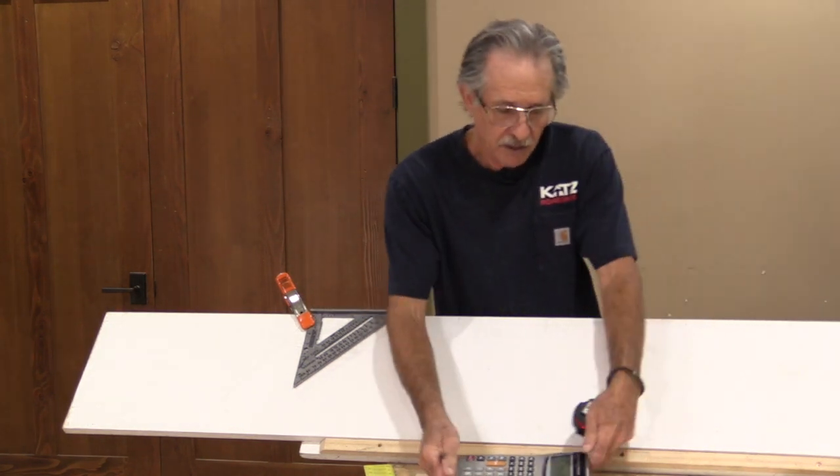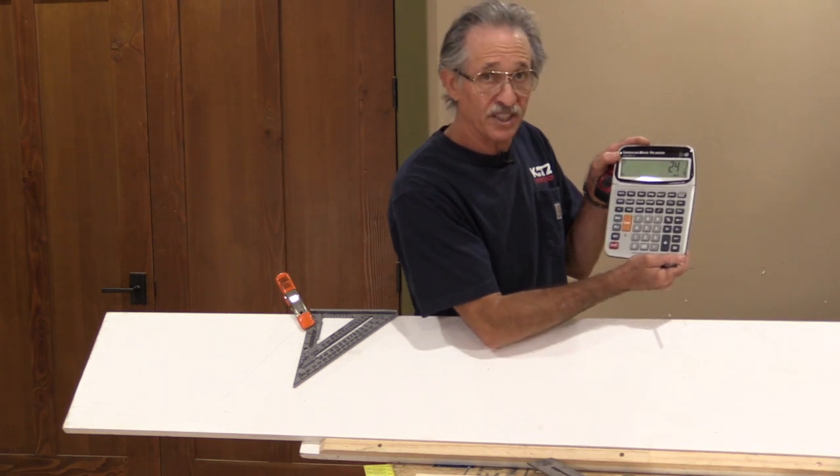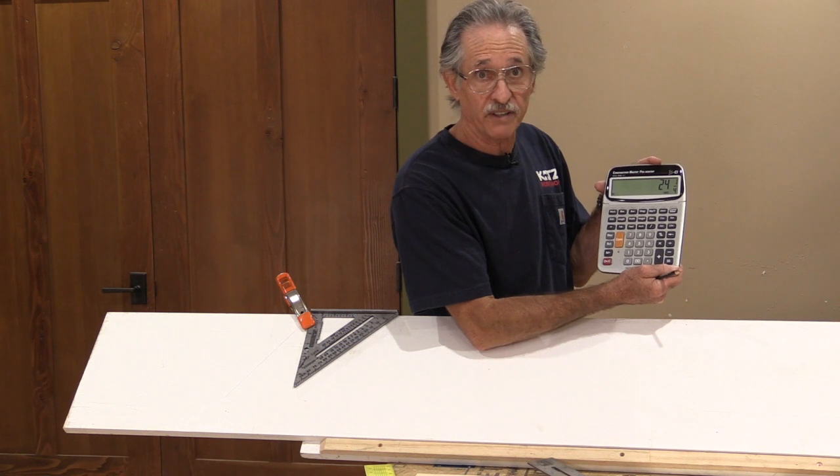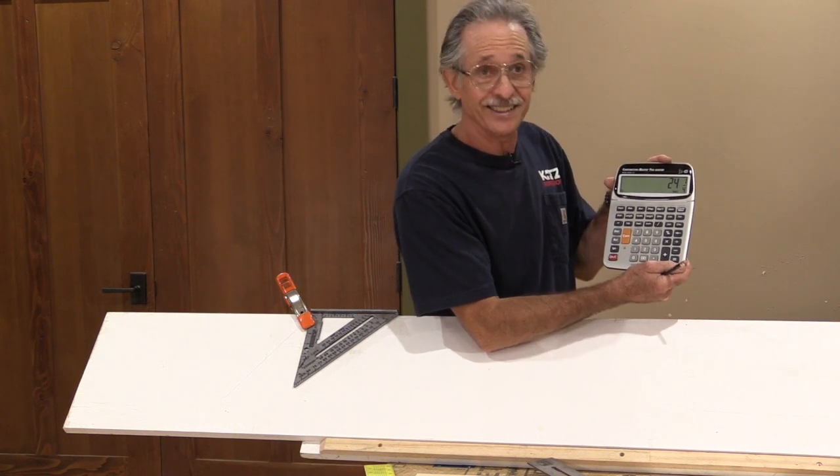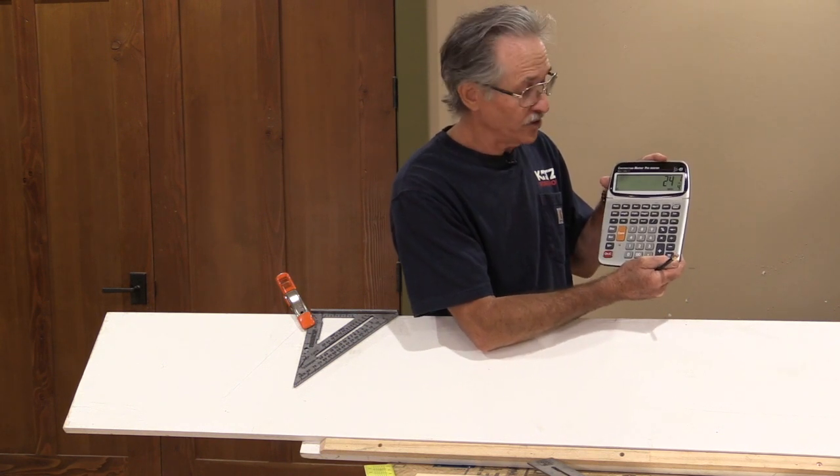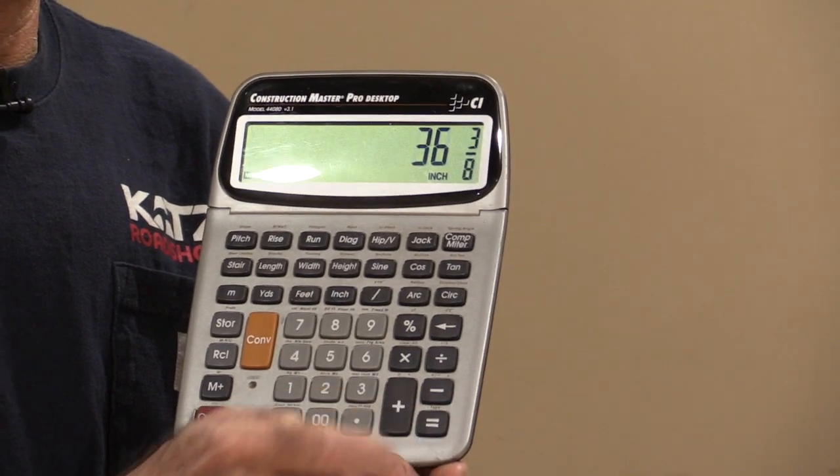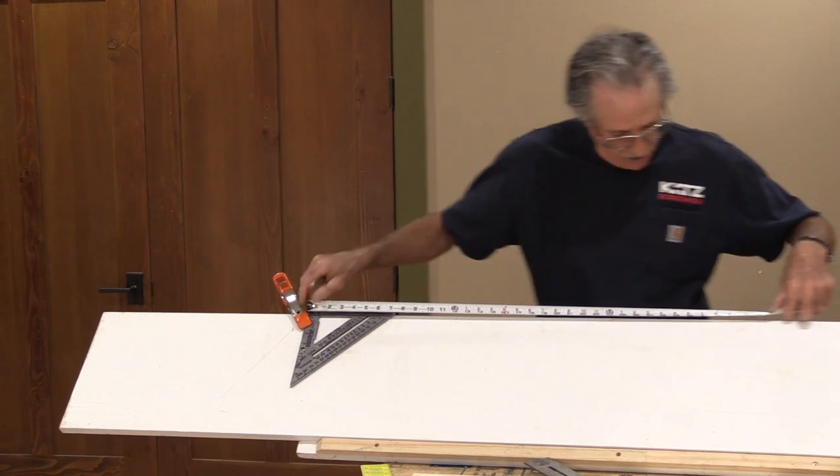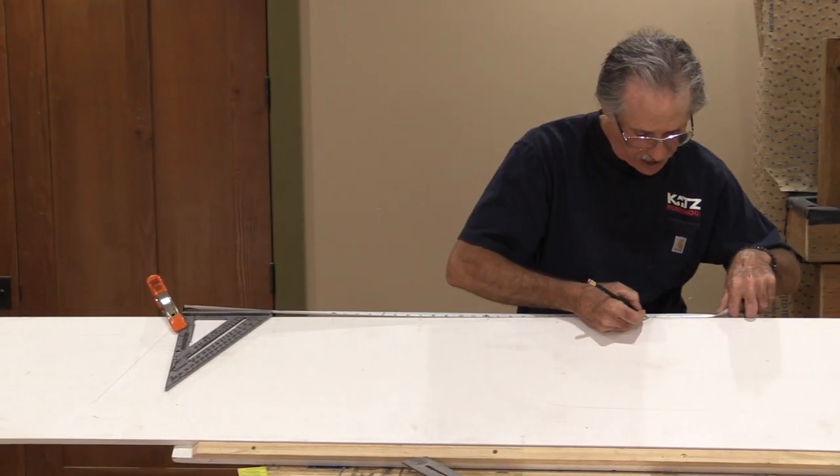So I hook my tape in the same location, 24 and a quarter right there. And then I'm going to do the same thing, but I'm not going to press the plus key again. If I did, it would start adding 24 and a quarter to itself. And I don't want that. I want it to add the original diagonal to itself. So I'll just push the equals button, 36 and 3 eighths. Same thing, 36 and 3 eighths.